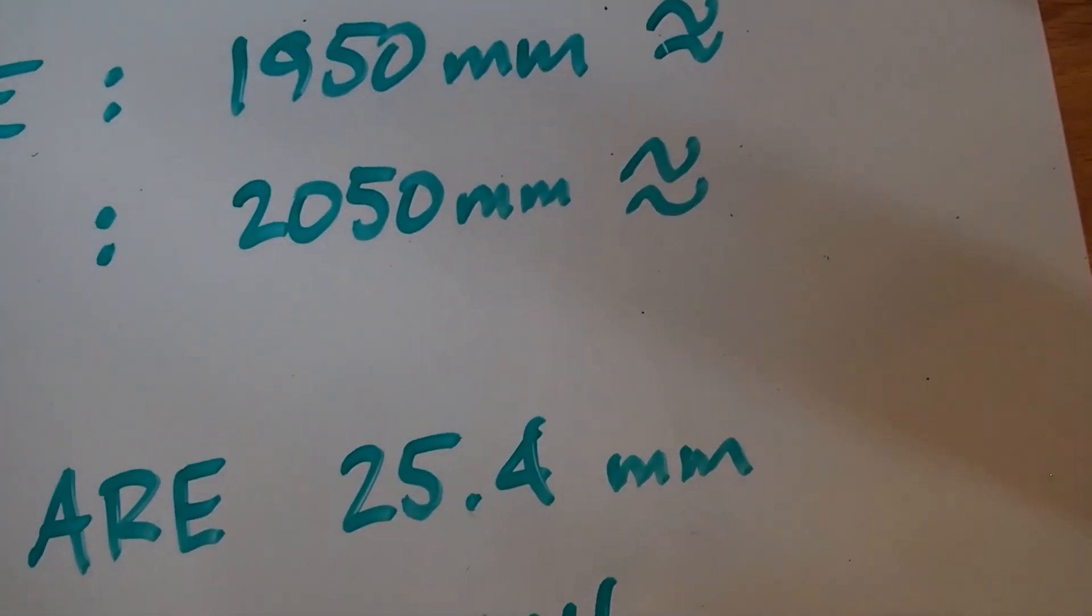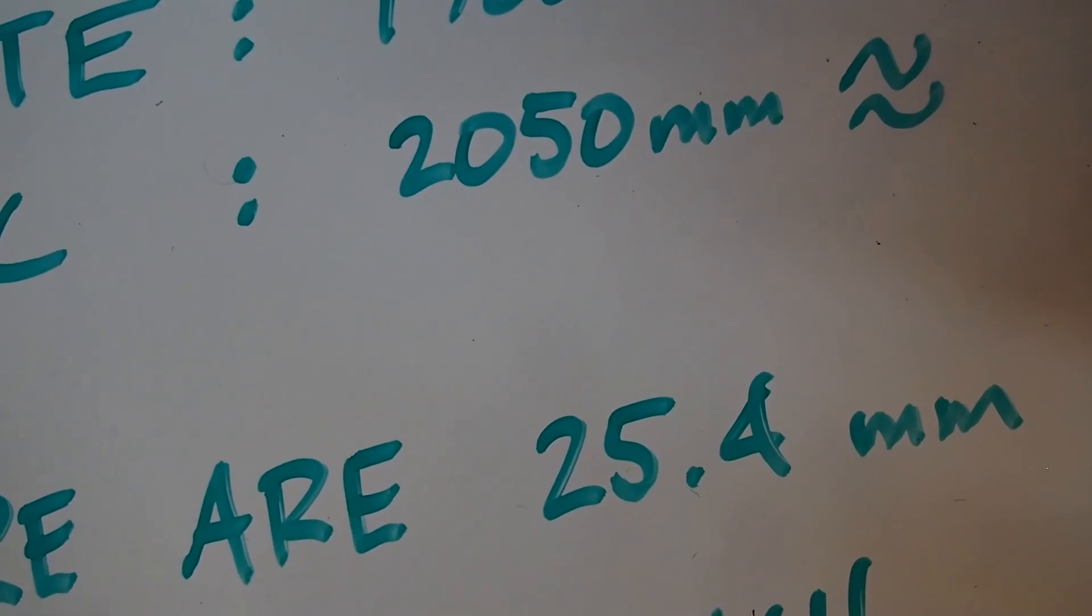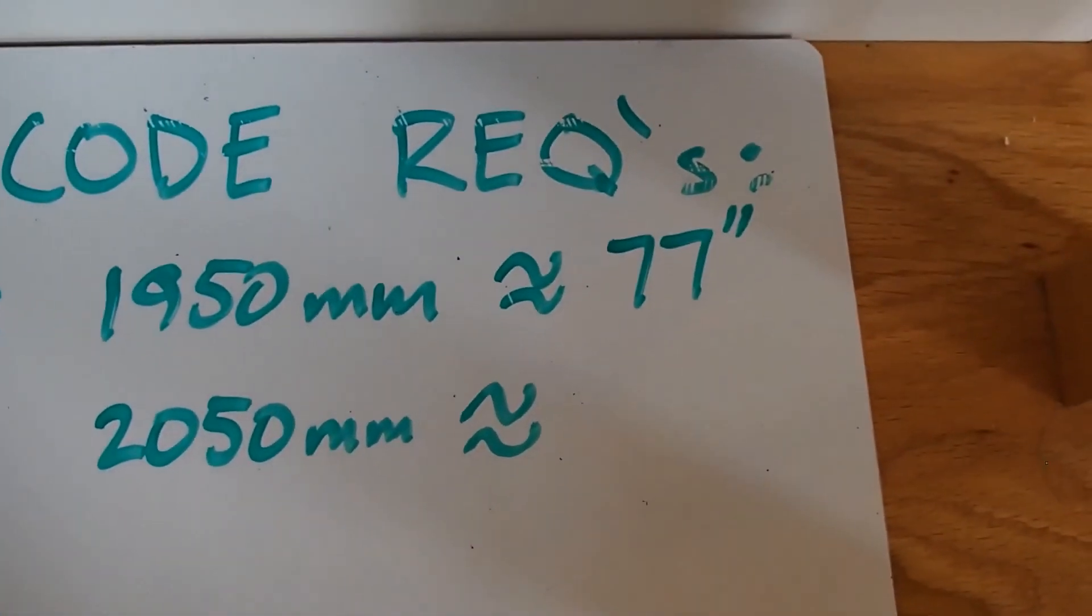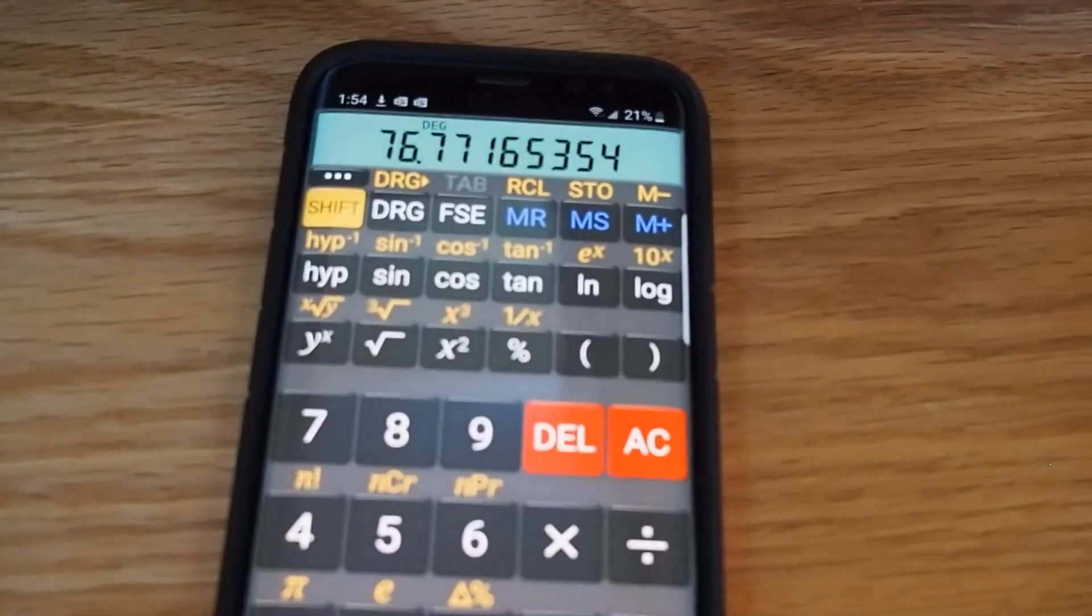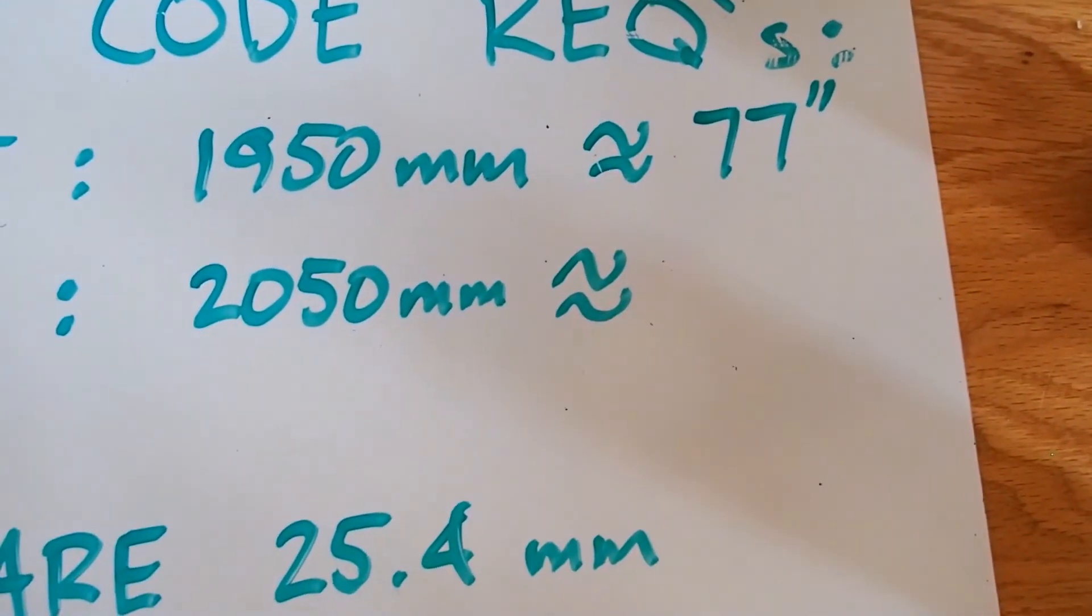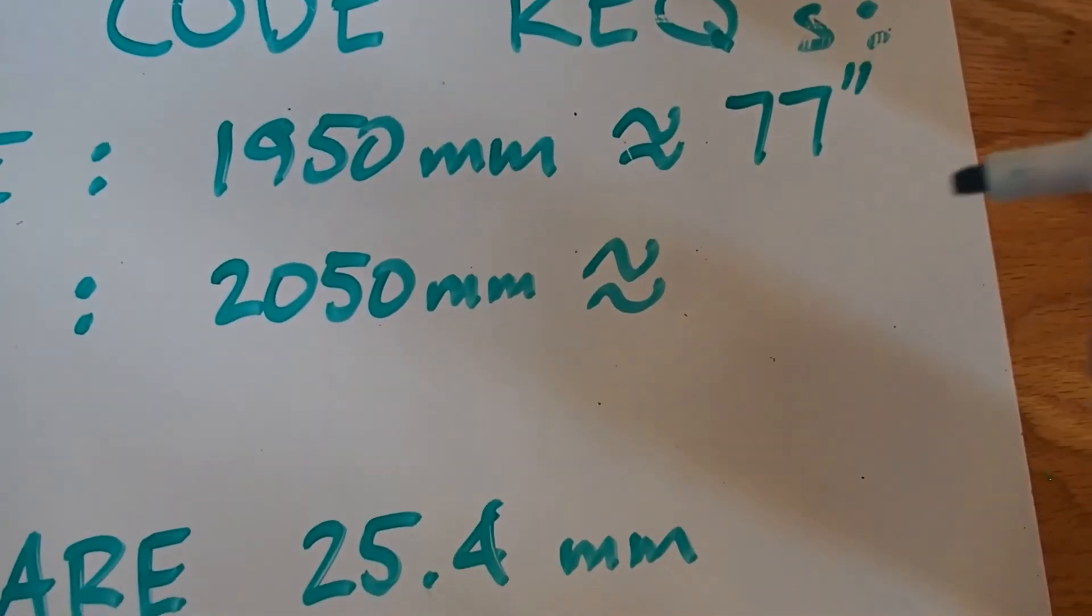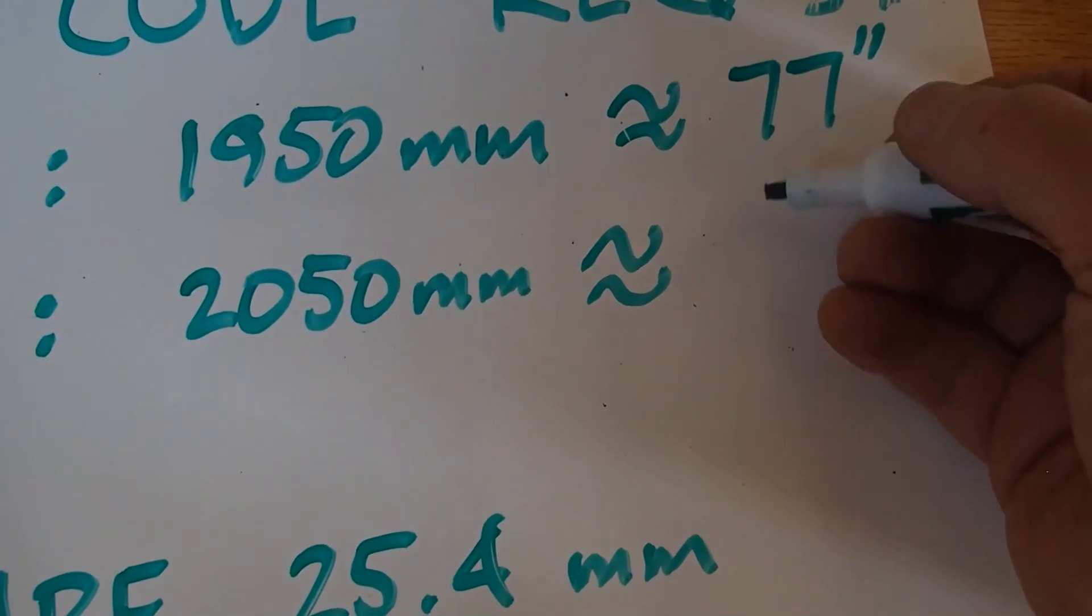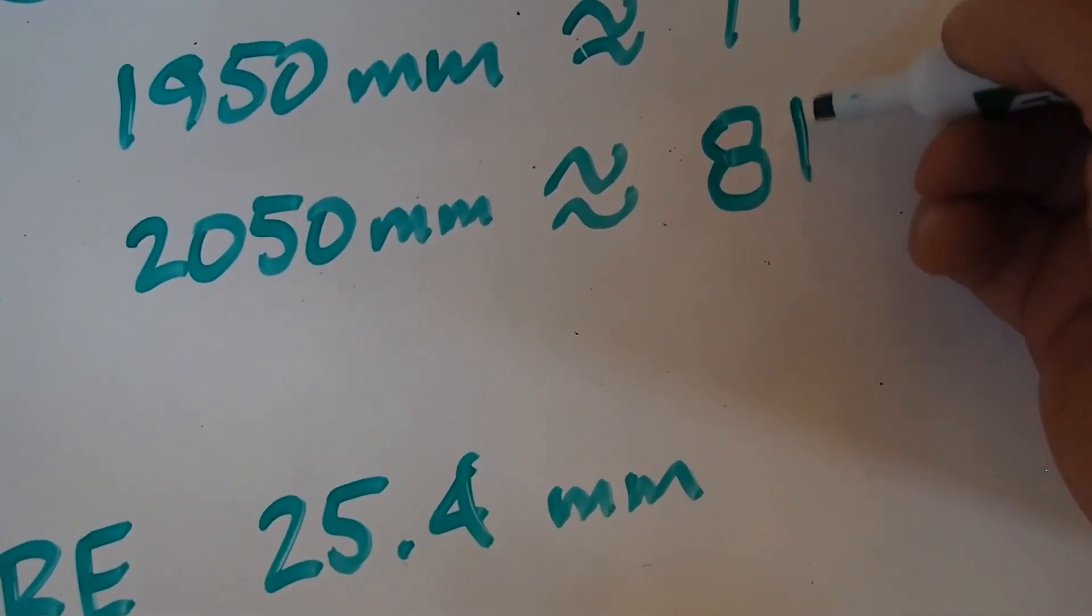And that is 77 inches. I've actually rounded that up. My calculator says 76.77, but I've rounded it up because you don't want the opening too small. And then 2050, I can just add 4 inches to that, because 100 millimeters is about 4 inches. So I have 77 and 81 inches.